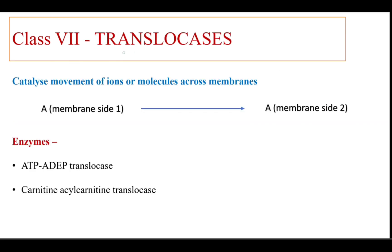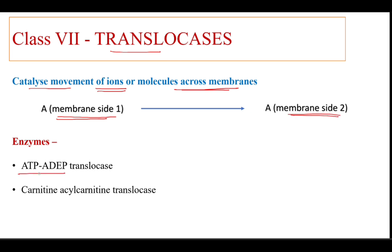Class 7: translocases. These enzymes are mainly involved in catalyzing the movement of ions or molecules across the membrane. They catalyze the transfer of particular molecules from one side of a membrane to the other side. Examples are ATP-ADP translocase, carnitine-acylcarnitine translocase, etc.